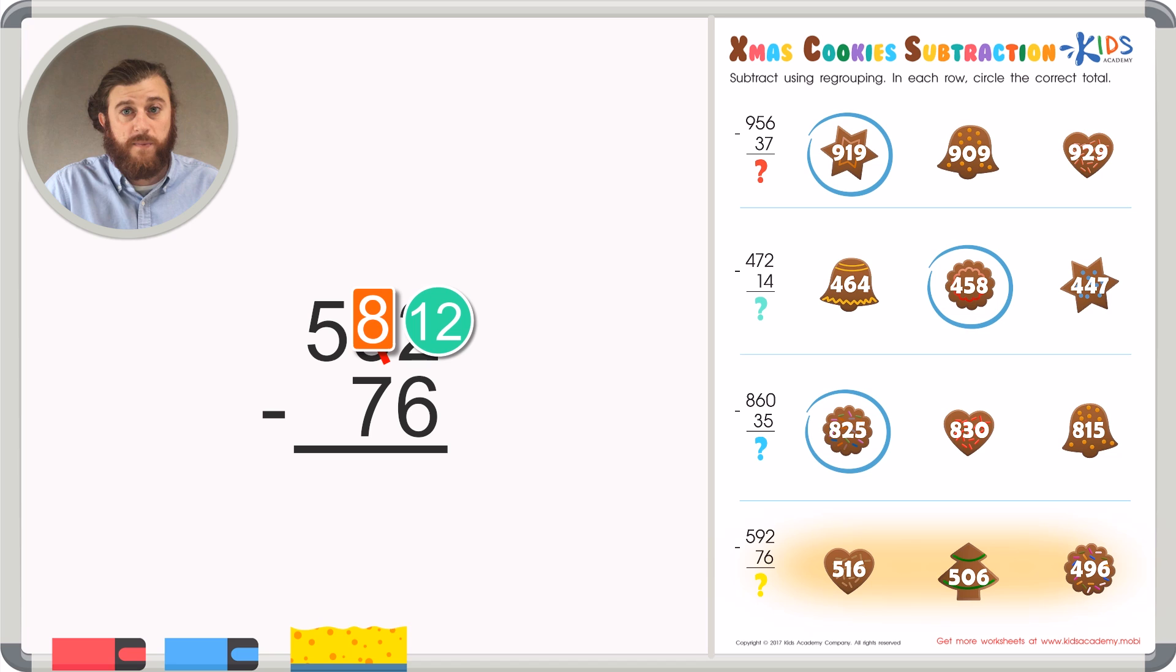12 minus 6 is 6. We can continue subtracting from right to left. 8 minus 7 is a difference of just 1. And 5 minus nothing is just 5. Leaving us with a total difference of 516. Our first answer choice.